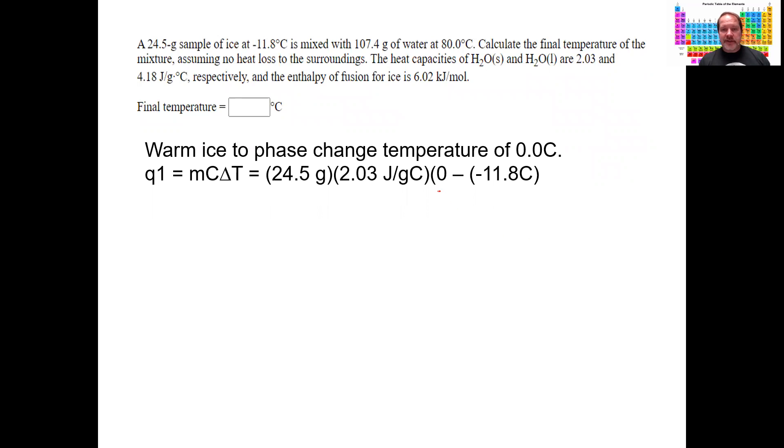And then there's the heat capacity of ice and the mass of ice. I plug the ΔT down there into 11.8, and I do all the multiplication, I get 586 joules.